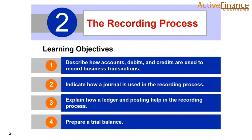These are the learning objectives of the second chapter, the recording process. First: describe how accounts, debits, and credits are used to record business transactions. Second: indicate how a journal is used in the recording process. Third: explain how a ledger and posting help in the recording process. Fourth and last: prepare a trial balance.